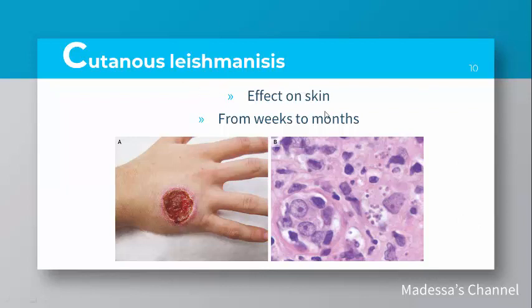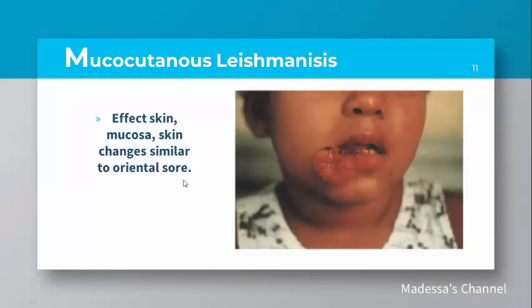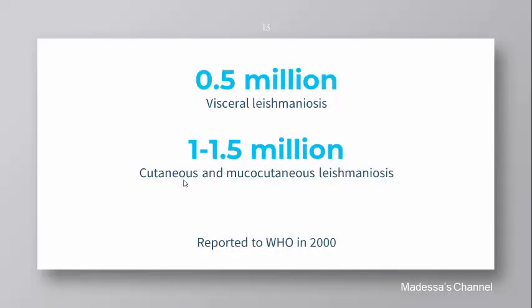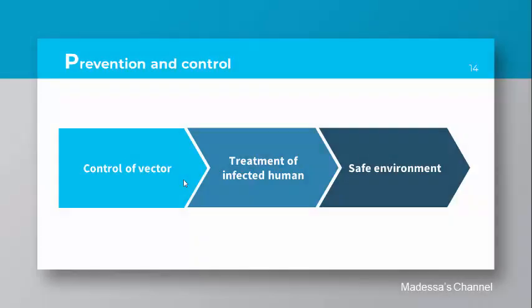Cutaneous leishmaniasis affects the skin, with an incubation period ranging from weeks to months. It is not as severe as visceral leishmaniasis. Mucocutaneous leishmaniasis affects the skin and mucosa with skin changes similar to oriental sores. The annual number of new cases estimated globally was 1.5 to 2 million, as reported to the World Health Organization in 2000 — of which 0.5 million were visceral and 1 to 1.5 million were cutaneous or mucocutaneous leishmaniasis.